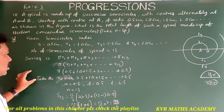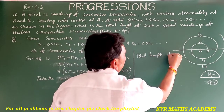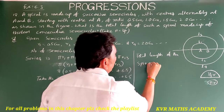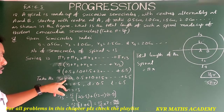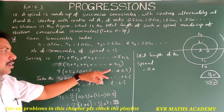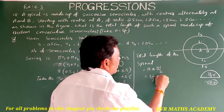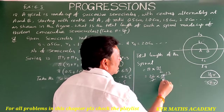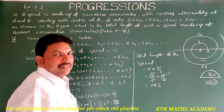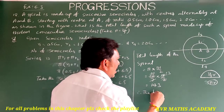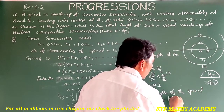So the total length of the spiral is π into 91/2. Using π = 22/7: total length = 22/7 × 91/2. Here 7 cancels into 91 giving 13, and 2 cancels into 22 giving 11. So 11 × 13 = 143. Therefore the total length of the spiral is equal to 143 centimeters.